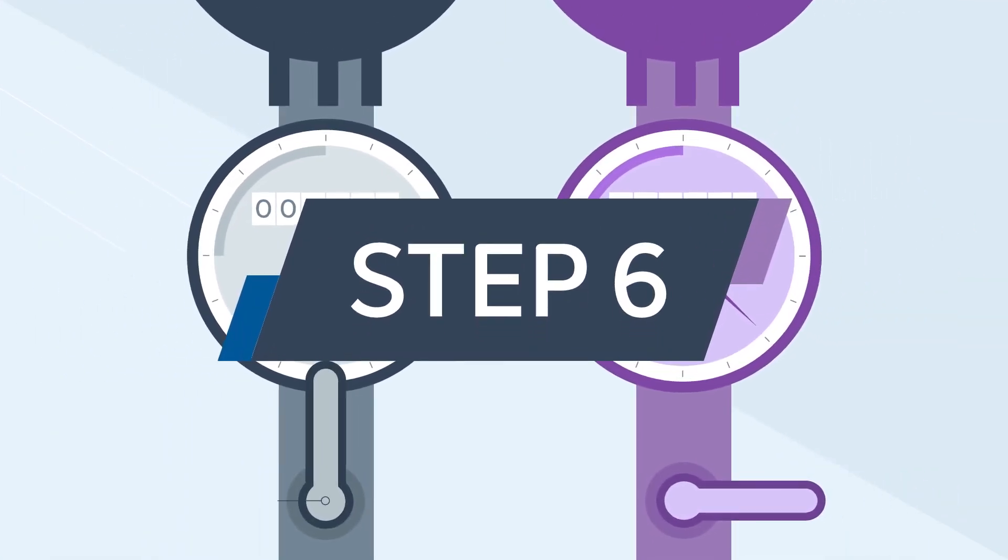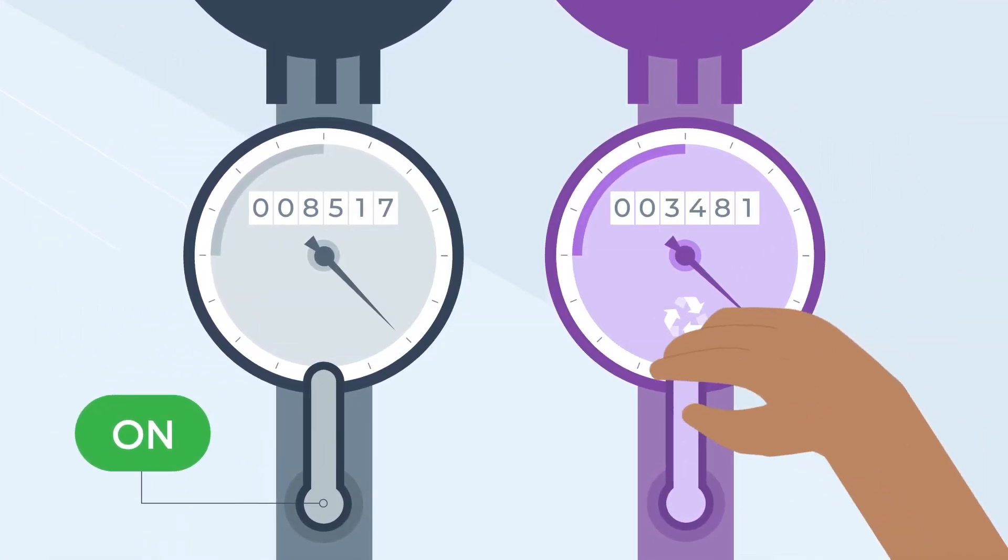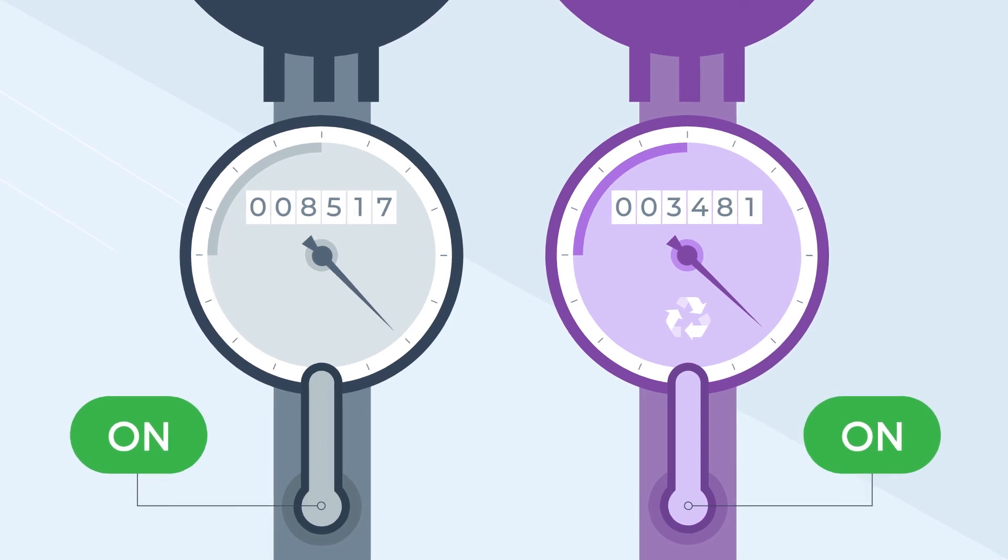Step 6. You can now turn your recycled water back on at the meter. This completes the purple tap test.